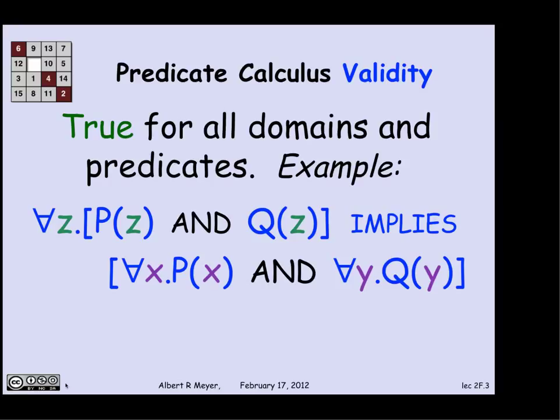because it's saying something about every possible z in the domain and every possible x and every possible y. The only thing that we need to know to make sense out of this formula to figure out whether or not it's true is what's the domain that x, y, and z range over, and what exactly do P and Q mean?